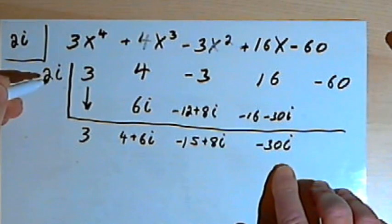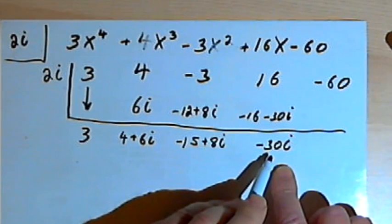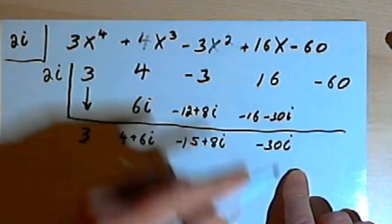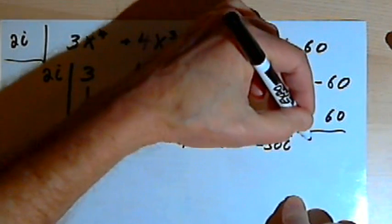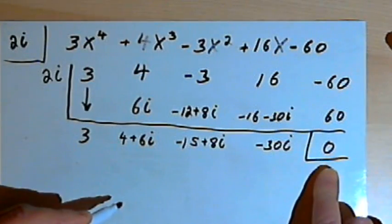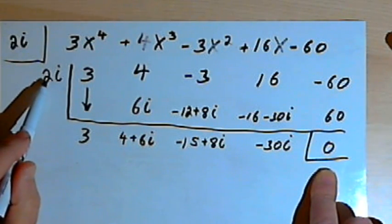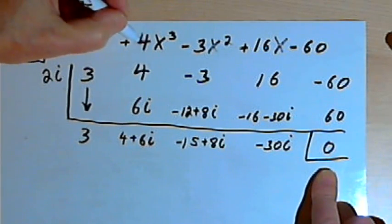And then when I multiply my last time, I get 2i times negative 30i, that would be negative 60i-squared, which is positive 60. Write that in my last column, add the two numbers in the last column together, and I get a zero, which is good, because if 2i is a zero of this original polynomial, then I would have to have a zero remainder.